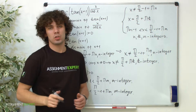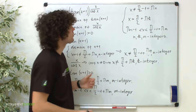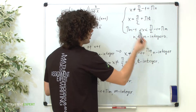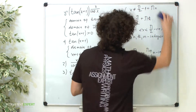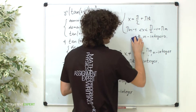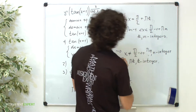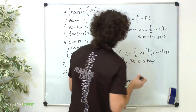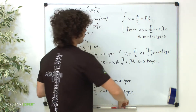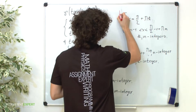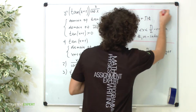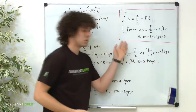Now let's have a closer look at all the conditions. As you can see, the first condition is included in the last one, so we can remove the first one. Now we have only two conditions, and this is actually the domain of this function. This is the answer.